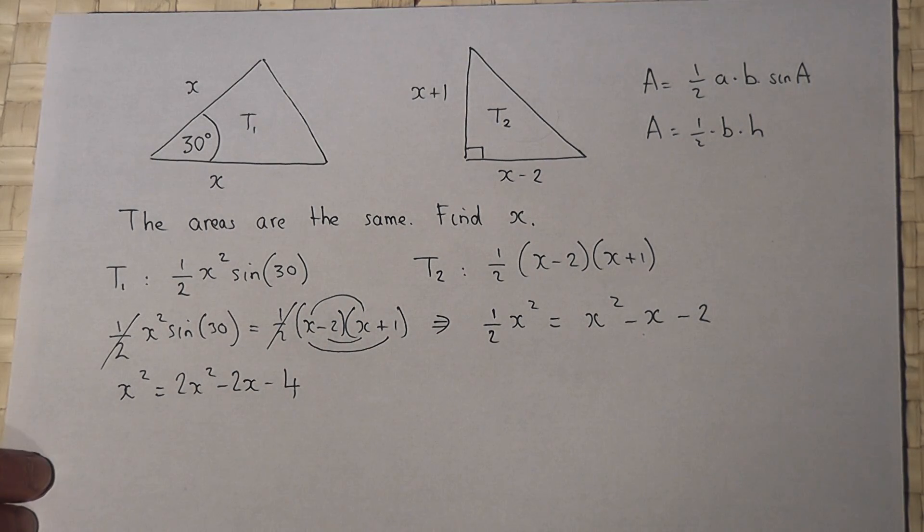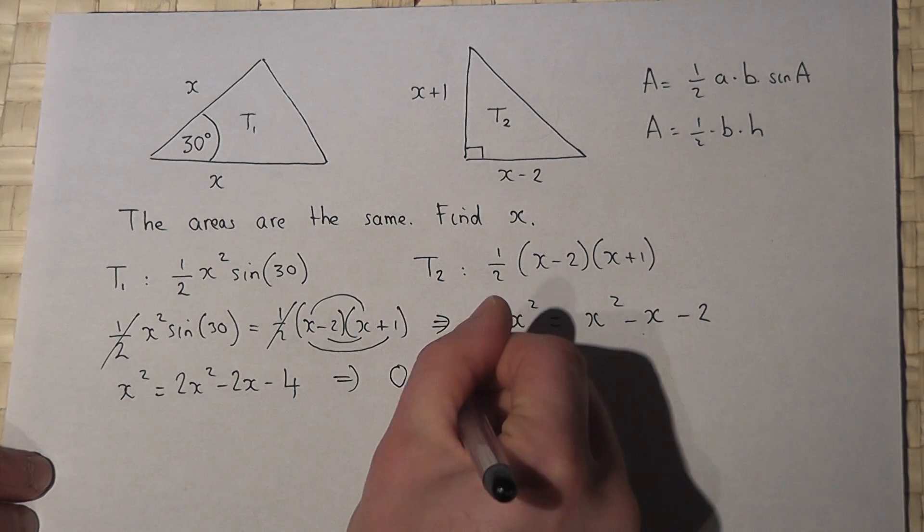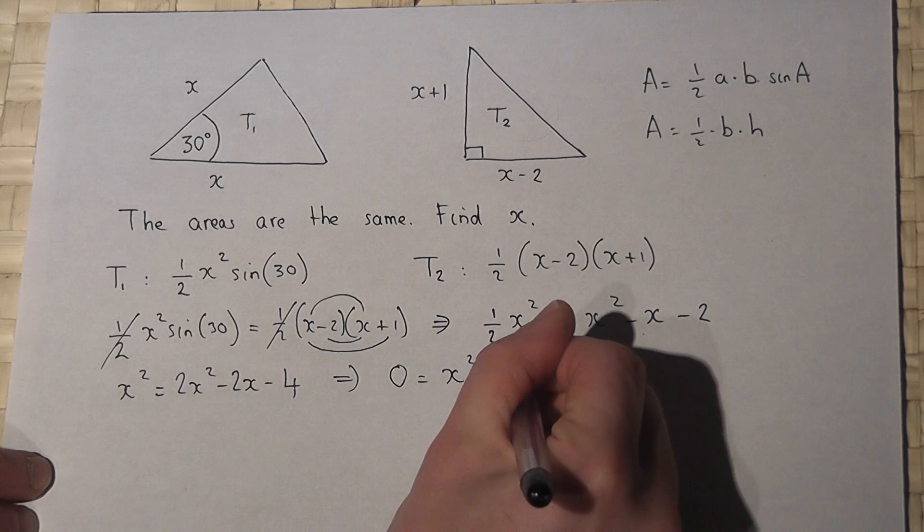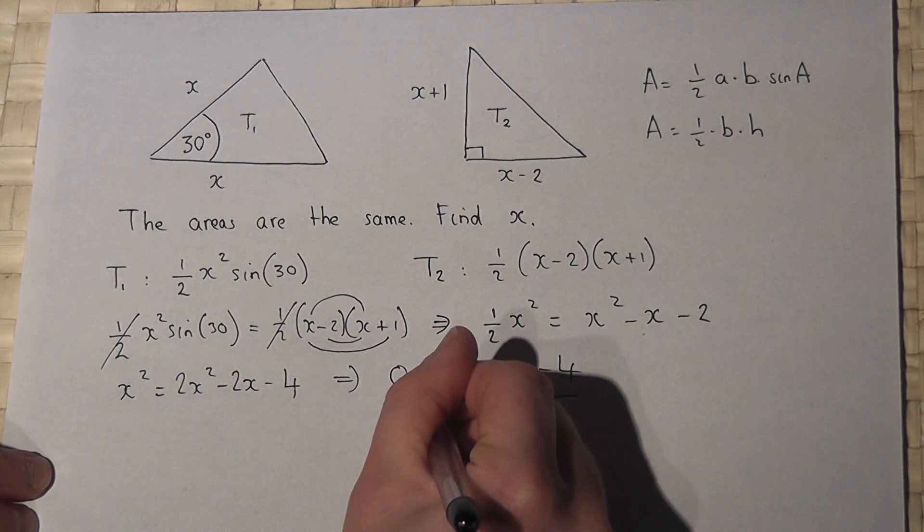I'll then rearrange to make the equation equal to zero by subtracting x squared. So 0 equals x squared minus 2x minus 4, and that becomes an equation to solve for x.